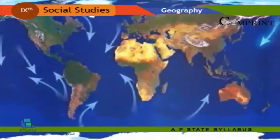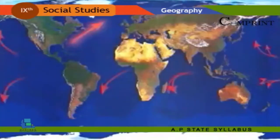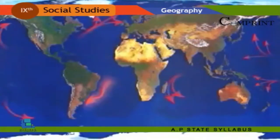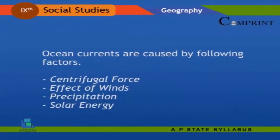Ocean currents are also classified as streams and drifts based on speed. A current that flows speedily is called a stream, and one that flows slowly is called a drift. Ocean currents are caused by the following factors: centrifugal force, effect of winds, precipitation, and solar energy.